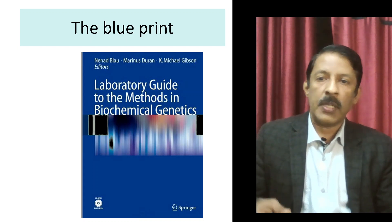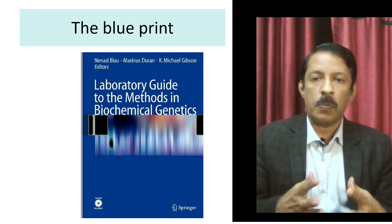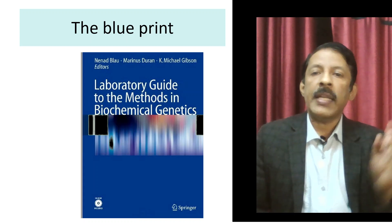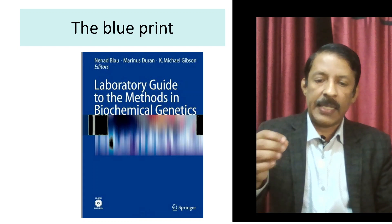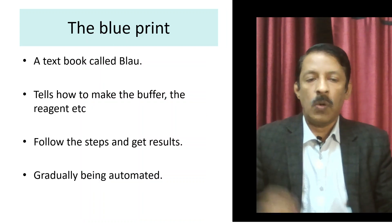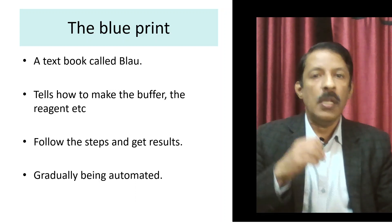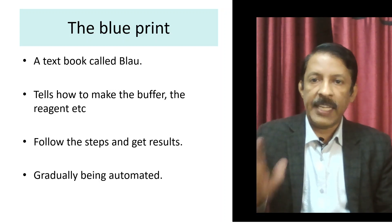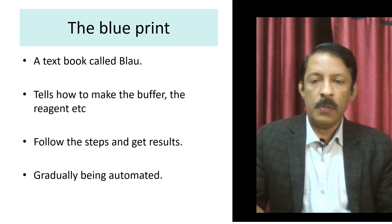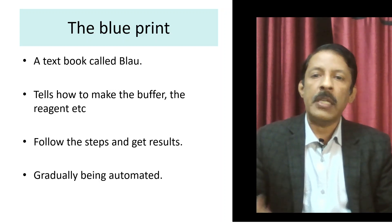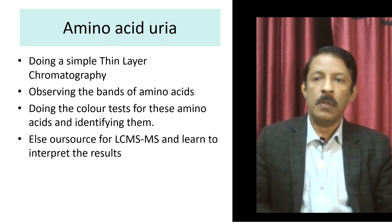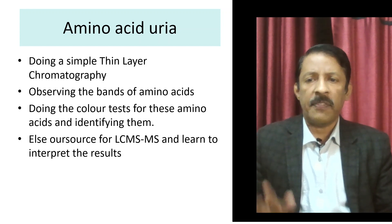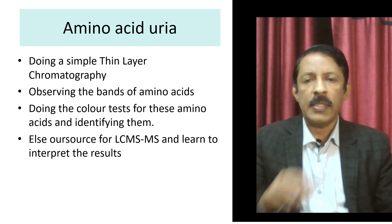In Dr. Seema Kapoor's lab while I was working, she showed me a book and said it was closely held property — however, with a little help from friends in IT, you can download this PDF. This book tells you exactly how to make the buffer, the compositions, the steps, the procedures, and how you get the colors. This is what most genetic disorder labs are following — they take a particular test, standardize it, and do it gradually. These tests are being automated and will start coming into the biochemistry platform where everybody can do them. Amino acid ureas: this is what I learned at Gangaram Hospital — simple thin layer chromatography to observe the bands of amino acids on the chromatography paper.